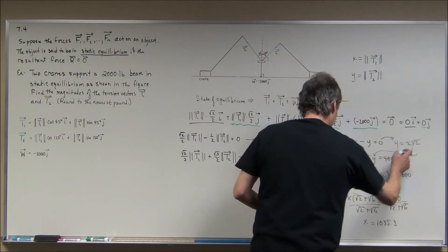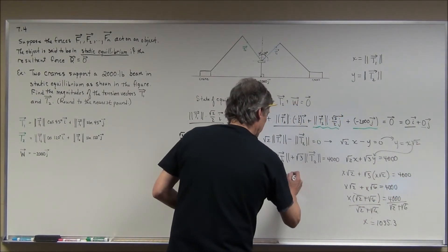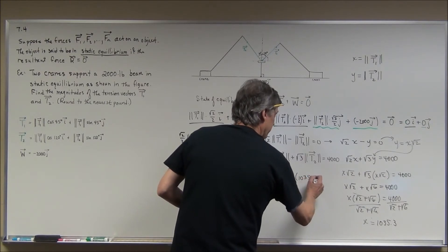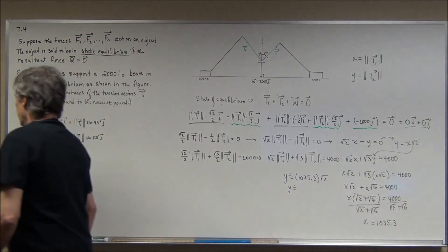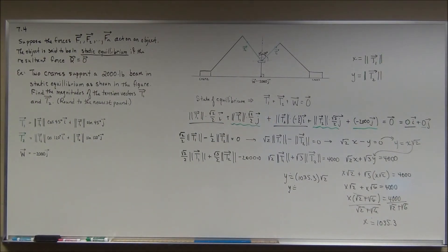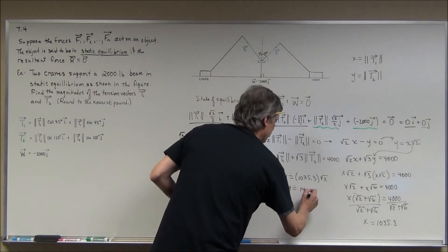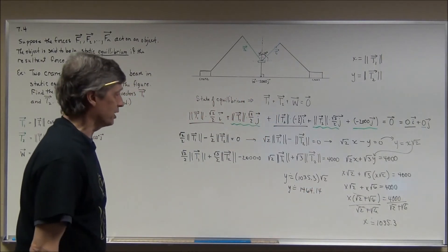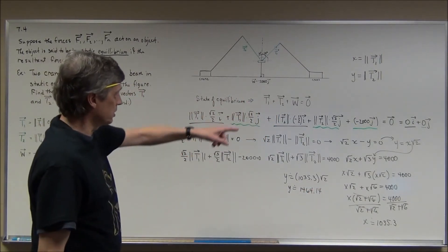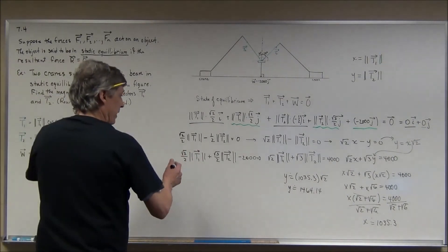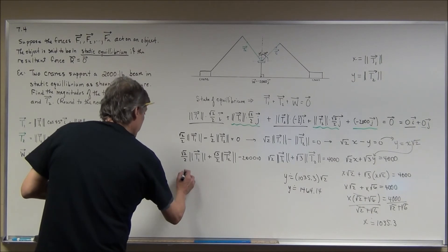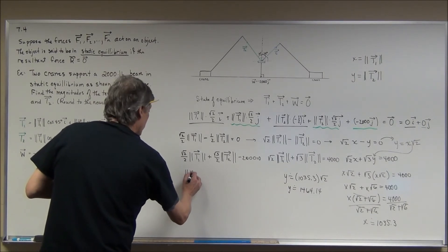Plugging back in, I get y equal to approximately 1,035.3 times the square root of 2, which gives y approximately 1,464.14. Now we're not solving for x and y — we're solving for the magnitudes, which is what the problem asks: find the magnitudes of the tension vectors T sub 1 and T sub 2. So I've got to plug back in — for x I have the magnitude of T sub 1.